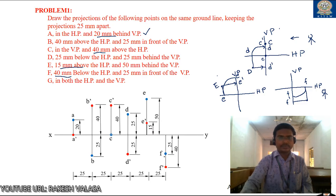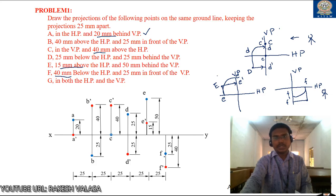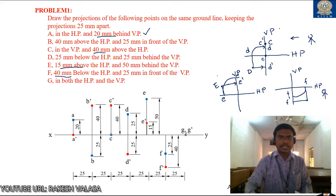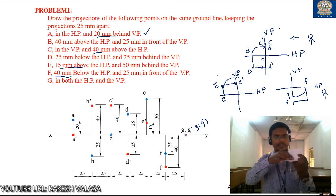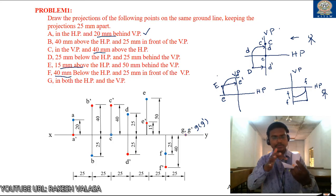The last point: G is on both HP and VP — that means it lies on the intersection of the horizontal and vertical planes, also called the principal plane. Both the front view and top view projections coincide. You can represent it as G/G' or G, G'. Both are the same. Both HP and VP means the coincidence of horizontal and vertical planes, so the front view and top view are at the same point — they coincide.